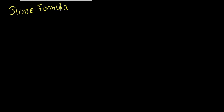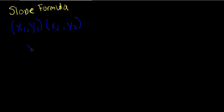In this section, we're going to be looking at the slope formula. The slope formula is used in order to find the slope between two different points on the same line. Pretend we have the coordinates x1, y1, and we have the coordinate pair x2, y2. We want to find the slope between these two different points on the same line. Slope, which is represented by the variable m, is going to equal y2 minus y1 divided by x2 minus x1. This is the slope formula.